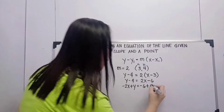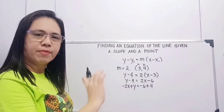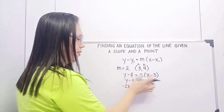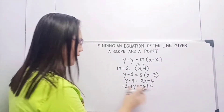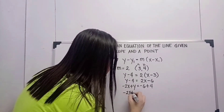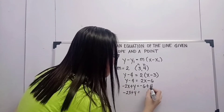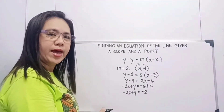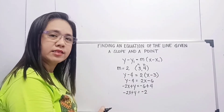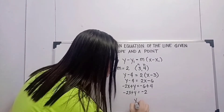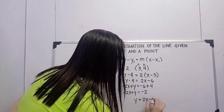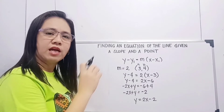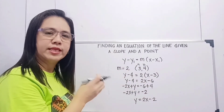Negative 4 will become positive 4. We transposed them simultaneously — we moved 2x to the left side with a changed sign, and negative 4 moved to the right side with a changed sign. So this will become negative 2x plus y is equal to negative 6 plus 4, which is negative 2. So this is now in standard form. But if we want to write it in slope-intercept form, this is y is equal to 2x minus 2. Whatever the teacher prefers — standard form or slope-intercept form — we can do either.